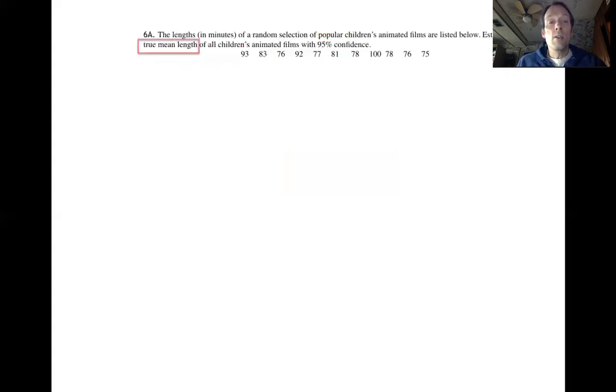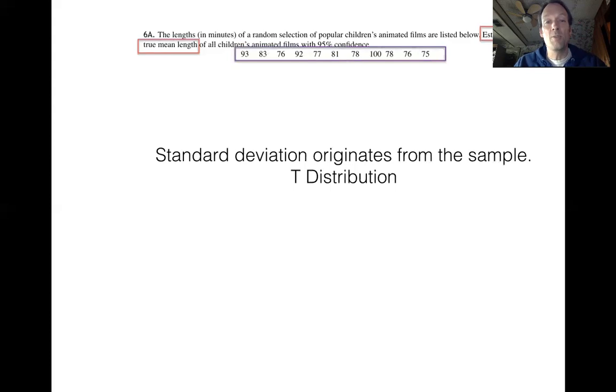Our keywords in here, they're asking us about a true mean length of some kind of an animated film. So it means that we're after a population average. They also told us 95% confidence, but all the other information seems to come from when they refer to the sample. All the sample data is present. And that means that everything else we need to work through the formula has to get mined from the sample. And that includes the sample standard deviation. So we're talking about estimating a population average. We're using a sample standard deviation. That's letting us know that we're going to end up using our t distribution formula.